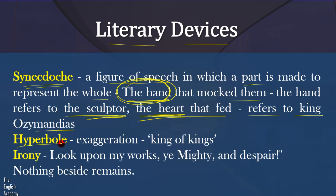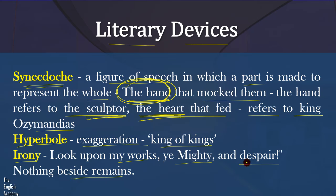The next device is Hyperbole, that is exaggeration. When he says 'king of kings,' this is exaggeration. Another literary device is Irony — irony means creating mockery of something. When he says 'look upon my works, ye mighty, and despair, nothing beside remains' — on one hand the king is saying look upon my great works and feel hopeless, but there is nothing to look upon. This is the irony.